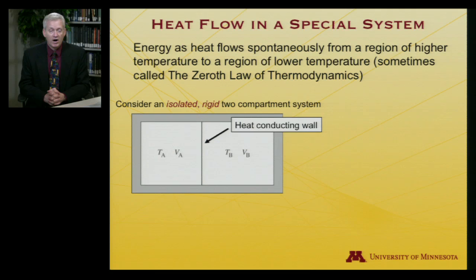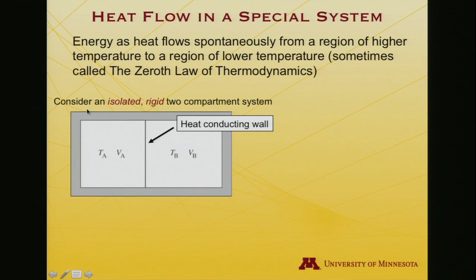Imagine you construct the following system. It is an isolated system, perfectly insulated from its surroundings, and it consists of two boxes. Those two boxes are rigid — there is a hard wall surrounding each box — but the wall that joins them is able to conduct heat. So heat can flow from one side to the other, although the volume of the individual boxes themselves does not change.